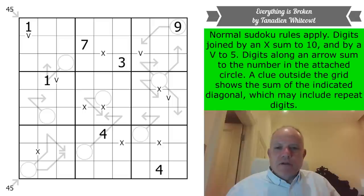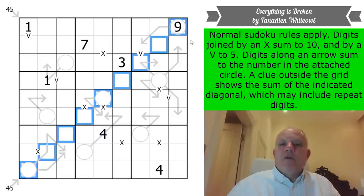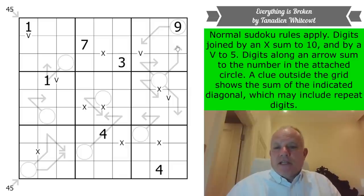Now, the rules of this are that normal Sudoku rules apply. Digits joined by an X sum to 10 and by a V sum to 5. Digits along an arrow sum to the number in the attached circle. And a clue outside the grid shows the sum of the indicated diagonal, which may include repeat digits, despite the fact that the two clues outside the grid are on the long diagonals and add up to 45. So I guess they may not include repeat digits in this case, but they may. It's an interesting idea, a sort of very jaggedy shapes in the grid. I'm reminded of Yeats's poem about all things uncomely and broken, which ends with something like your image that blossoms arose in the deeps of my heart. Right, let's get cracking. Do try it on the link under the video.